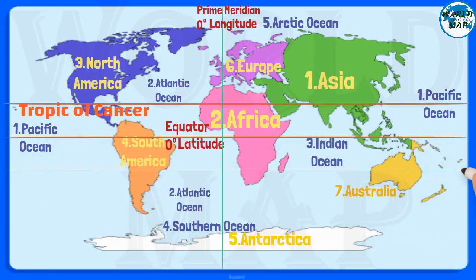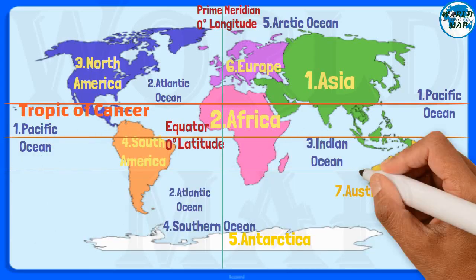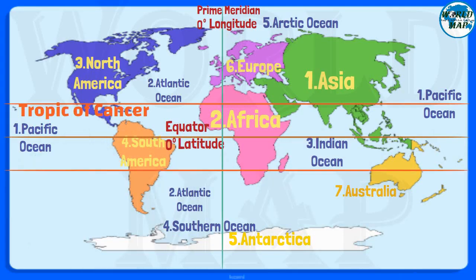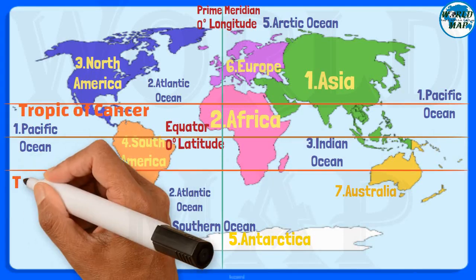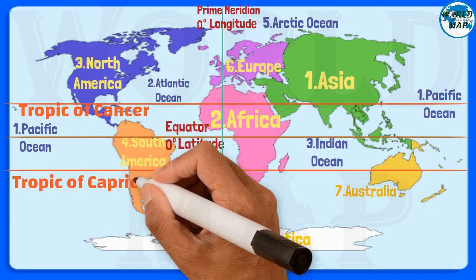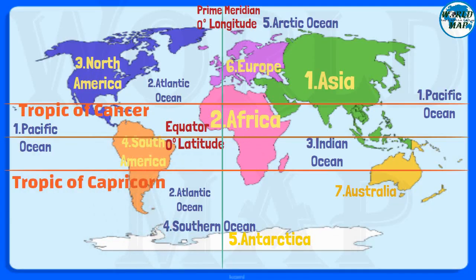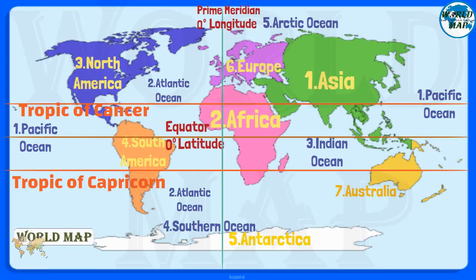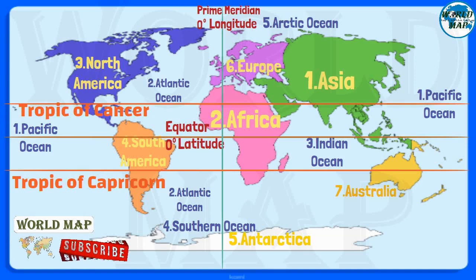Tropic of Capricorn. The Tropic of Capricorn is the circle of latitude that contains the sub-solar point at the December solstice. It is thus the southernmost latitude where the Sun can be seen directly overhead. It also reaches 90 degrees below the horizon at solar midnight on the June solstice.